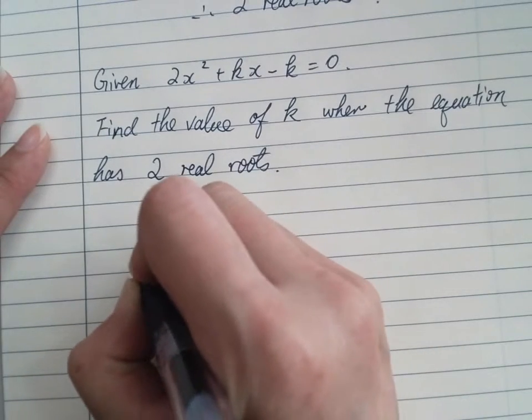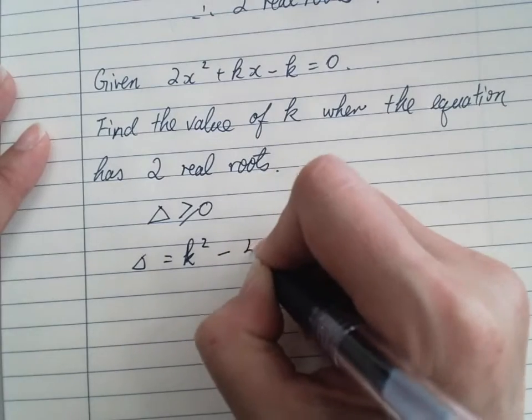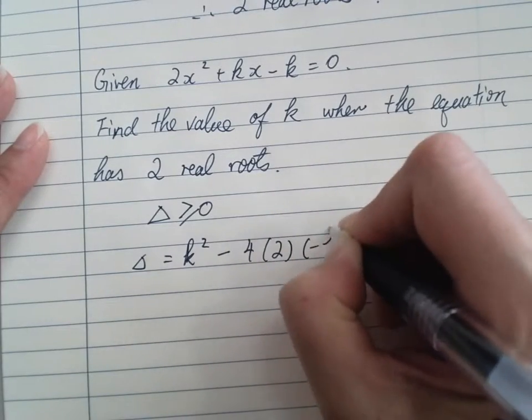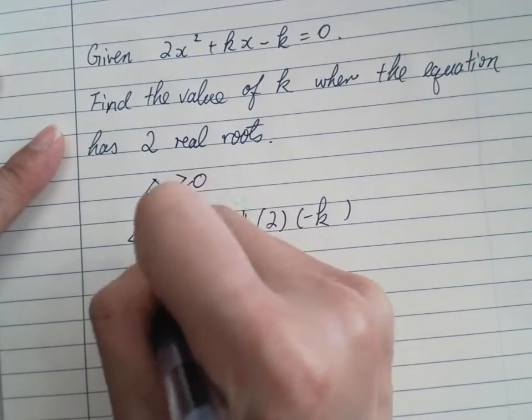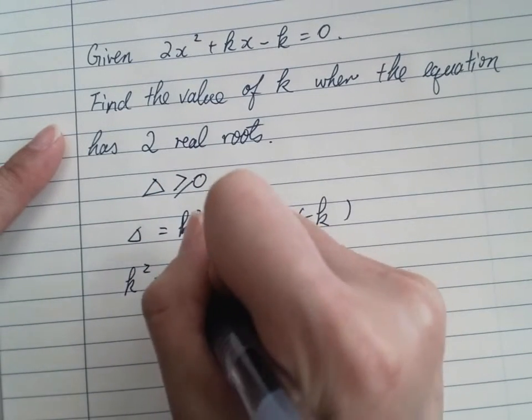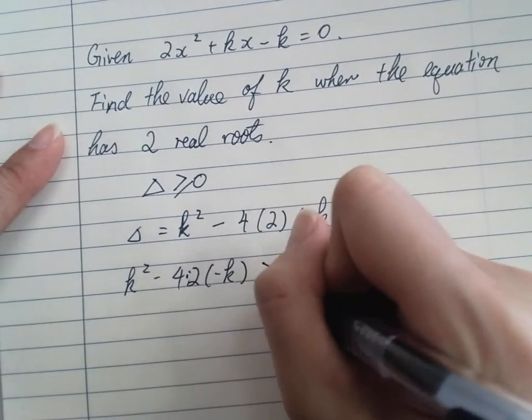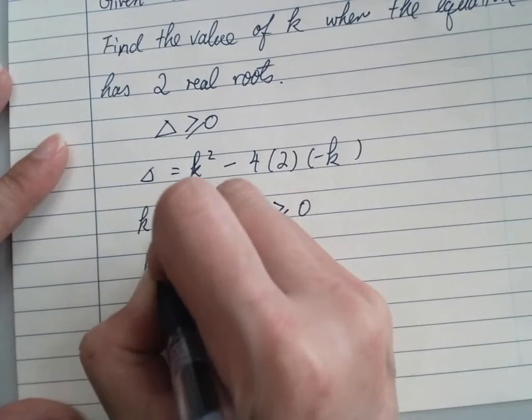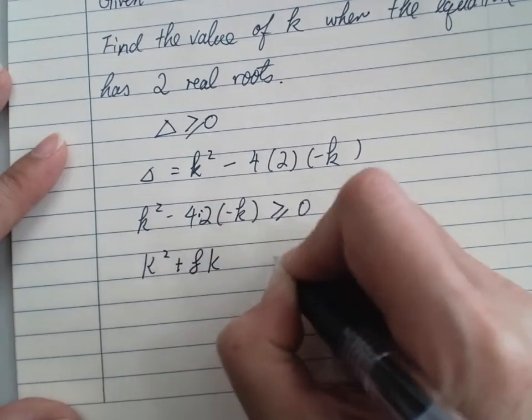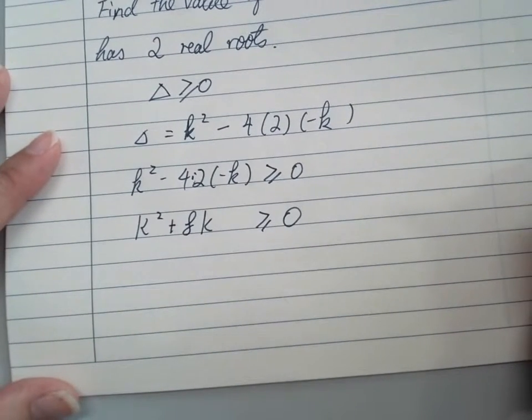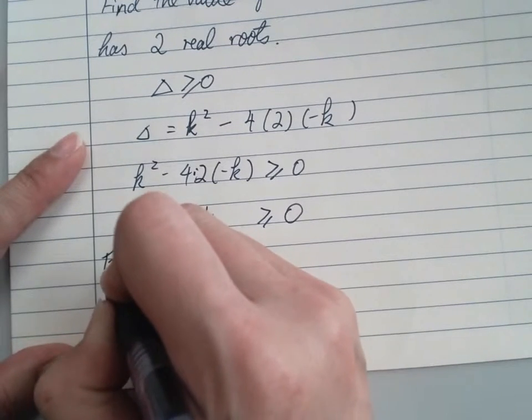And then what we have to do is like triangle. Equals to b squared minus 4ac. And in that case, rearrange that a little bit. Since this is a quadratic inequality, I have to move it into an equation to solve it first.